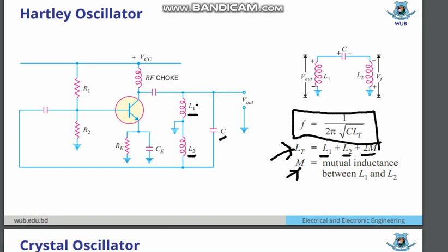In the L1 part you get the V output, and the feedback voltage has been created in the L2 part. This feedback voltage has been fed back to the input section — the same connections as before, but there is a change in the capacitor and inductor. If you take the Colpitts oscillator, remove the capacitors and replace with inductors, and replace the inductance with capacitors, then you will get the Hartley oscillator.